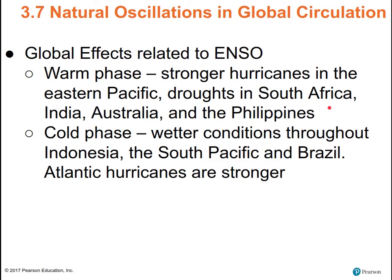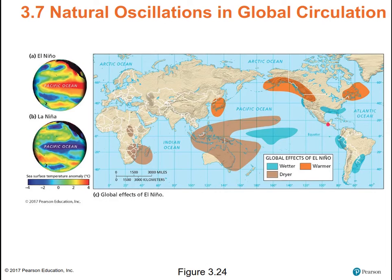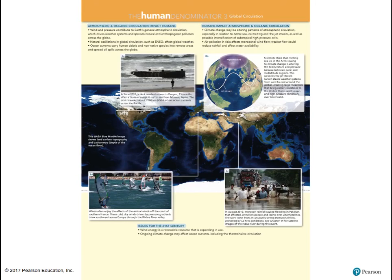The global effects of El Niño: generally, for California and the United States, generally wetter — however, not always. El Niños themselves are unpredictable and their effects are also unpredictable. Just because we're having an El Niño doesn't mean it's going to be a wetter year, although typically that's what happens. And that's it for this chapter. I hope you've enjoyed it and learned something. We'll pick up with Chapter 4 on weather next.